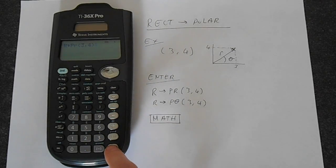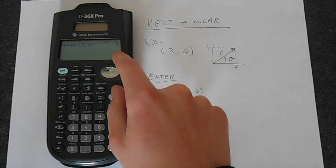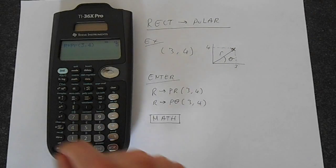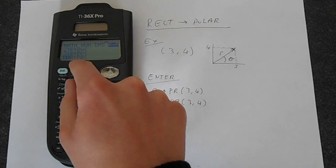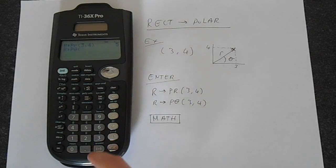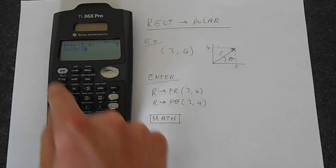Then 4, then close the brackets and then press enter and we get 5. Then we enter this, so you go back into math, go along, go down to number 4 or just press 4 and then put in 3.